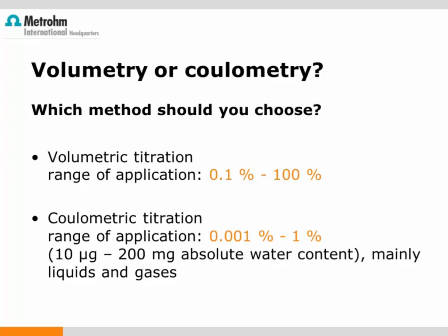Volumetry or coulometry — which method should you choose? Generally, volumetric Karl Fischer titration is used to determine higher water contents in the range of 0.1 to 100%. It is suitable for all types of samples: gaseous, liquid, or solid, and the titration vessel can be briefly opened to add the sample. Coulometry is used for lower water contents, down to trace-level determinations. For direct measurements, it is suitable for liquids and gases. Solids cannot be added directly as atmospheric moisture would lead to wrong results — the lower the water content, the higher the influence from atmospheric moisture.